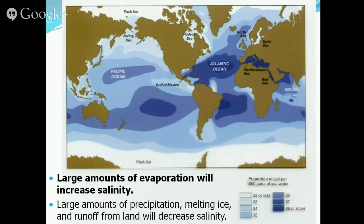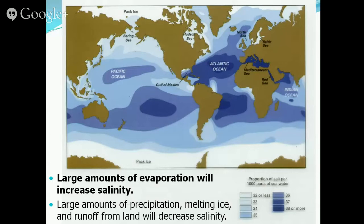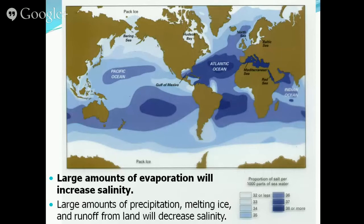The opposite must also be true: if taking water away increases salinity, then adding water must decrease salinity. So rainfall or melting of ice tend to decrease the salinity in an area. That's why you'll notice the lighter colors are near the poles — more melting ice glaciers are melting, and this meltwater mixes with ocean water to make less salty water.